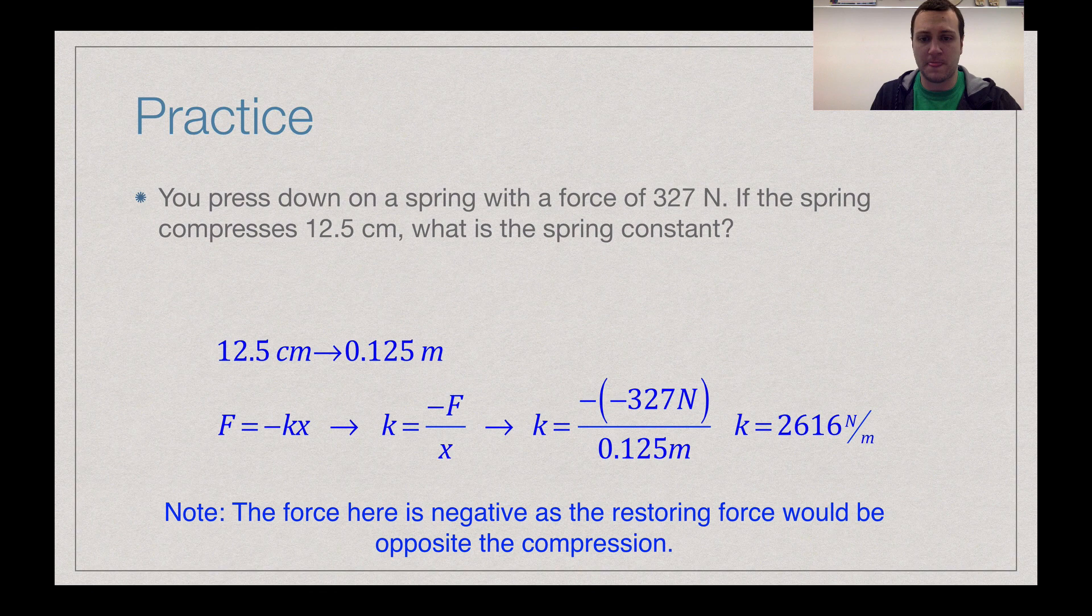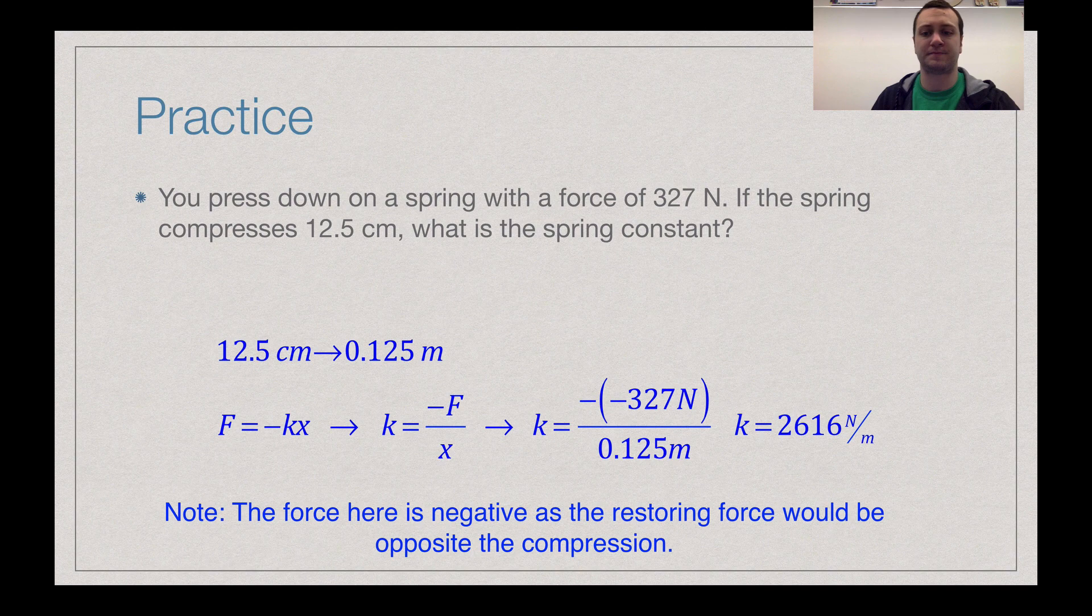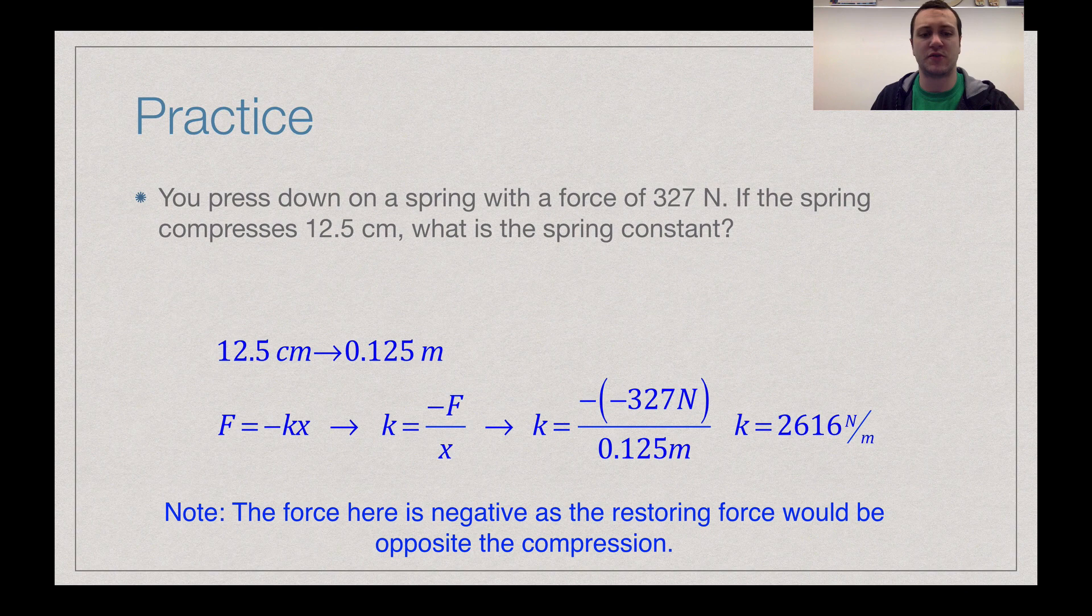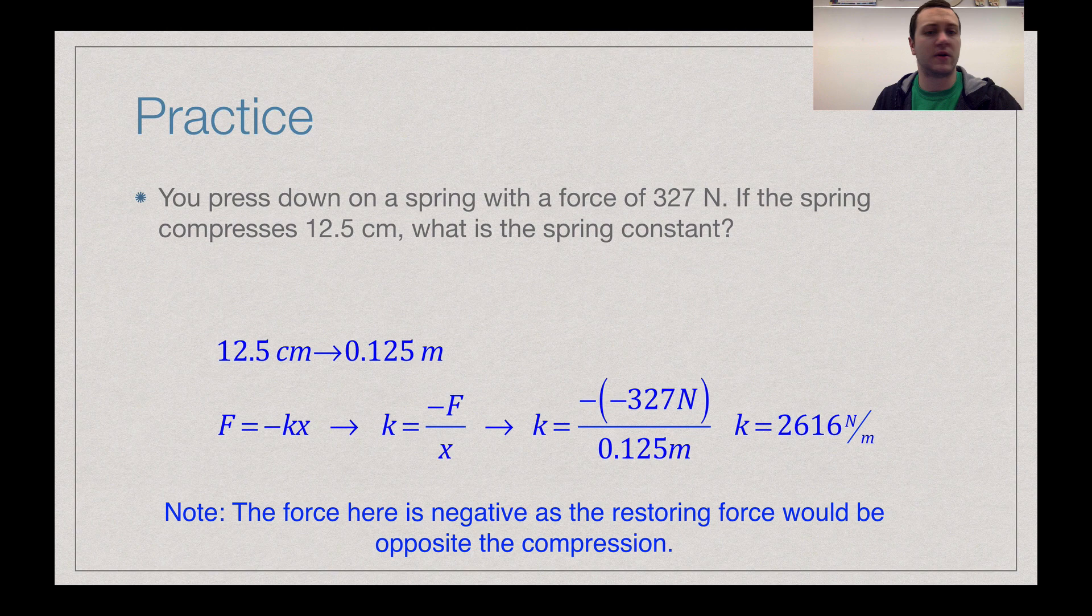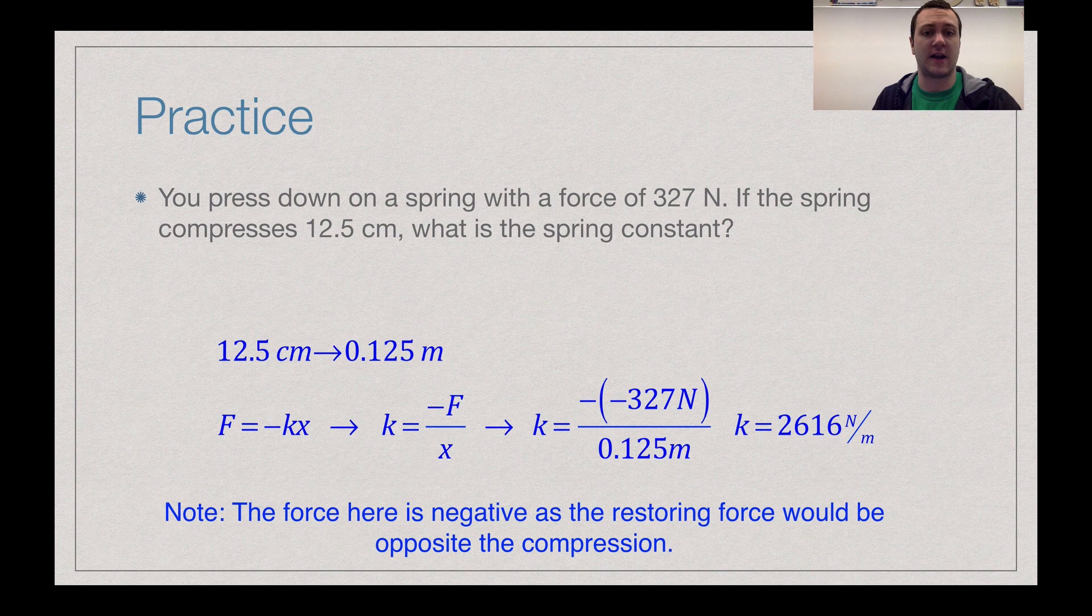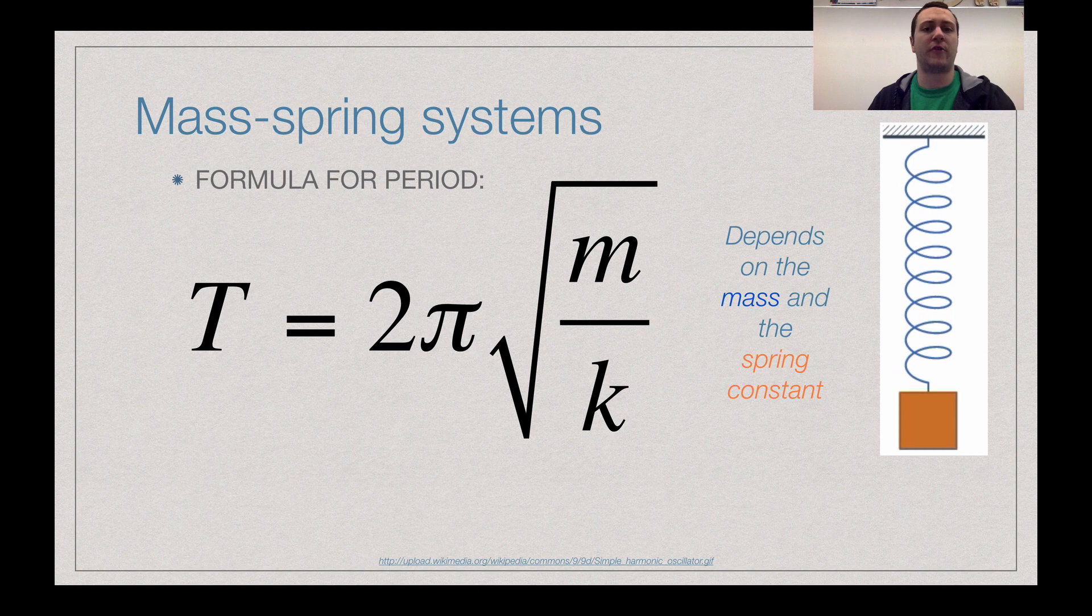So what's good here is we have a negative of a negative, which makes it positive. If you did not include the 327 as being a negative force, the K value would have come out to be negative 2,616 newtons per meter. And that would have been incorrect because spring constants are always positive values. So that's what we would do here. Again, your force and your compression or stretch have to be opposite directions. You pick. You get to pick. You kind of have that freedom to do so here.